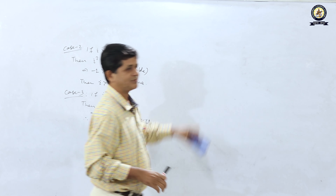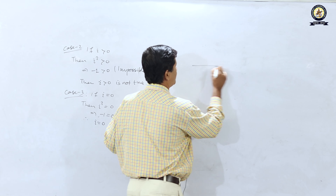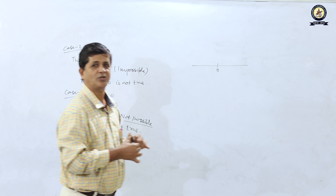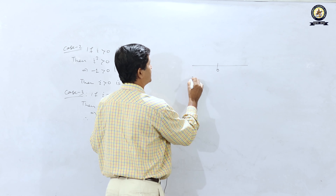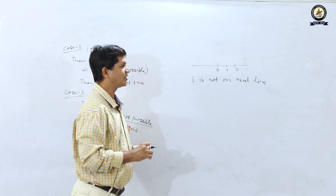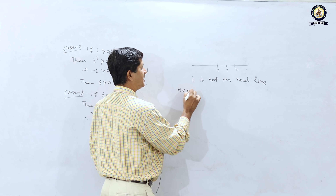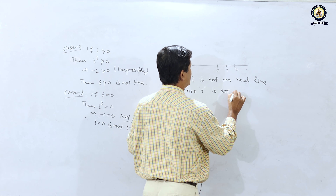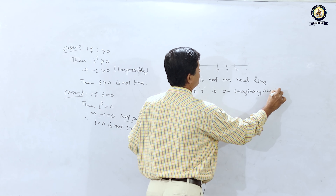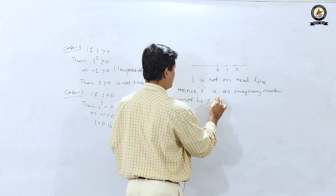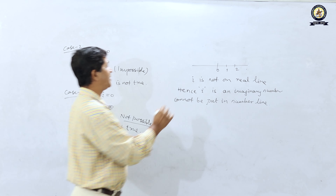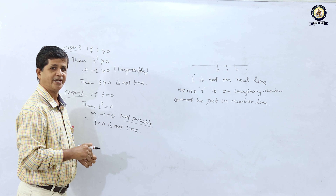These three cases show that i cannot exist on the number line — it is neither to the right of 0, on 0, nor to the left of 0. So i is not on the real line. Hence i is an imaginary number that cannot be placed on the number line. i is neither negative nor positive.